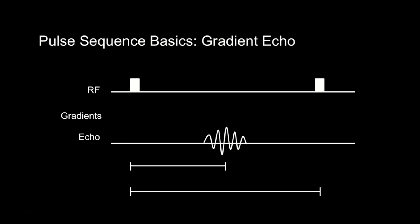We now have enough information to define two key pulse sequence parameters: TE, or time to echo, and TR, or time to repetition, both measured in milliseconds. The TE is defined as the time from the center of the RF pulse to the center of the echo. The TR is the repetition time, defined as the length of time between corresponding consecutive points on a repeating series — more simply, from RF pulse to RF pulse.